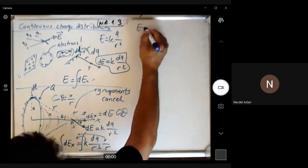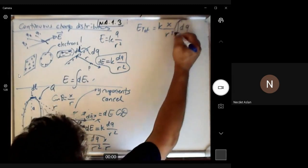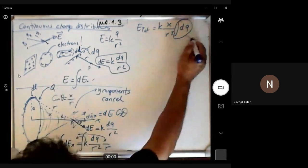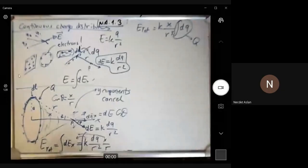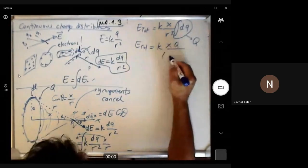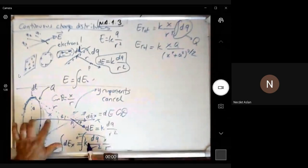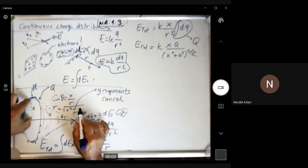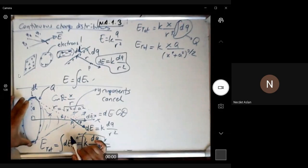What remains inside the integral is just dq. Integrating all the small dqs adds up to the total charge Q. So the total electric field is E_total = kxQ/r³. Since this is a right triangle with legs x and a, we have r = √(x²+a²), so r³ = (x²+a²)^(3/2). Therefore E_total = kQx / (x²+a²)^(3/2).